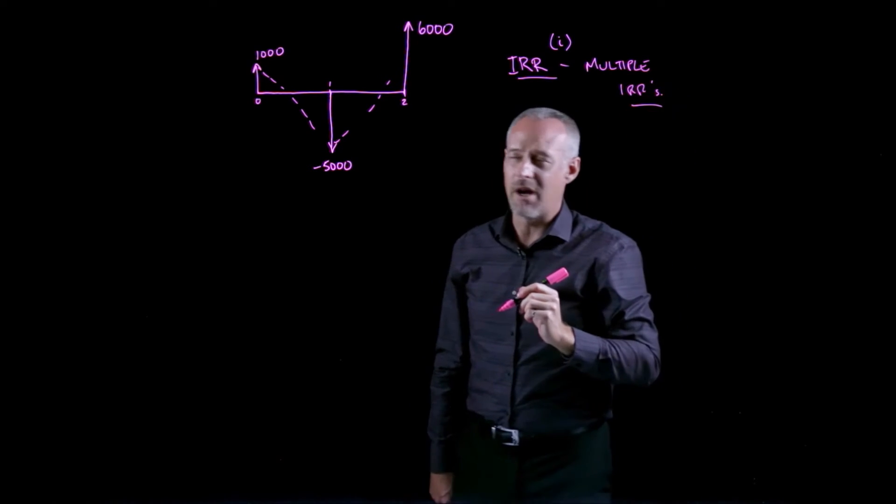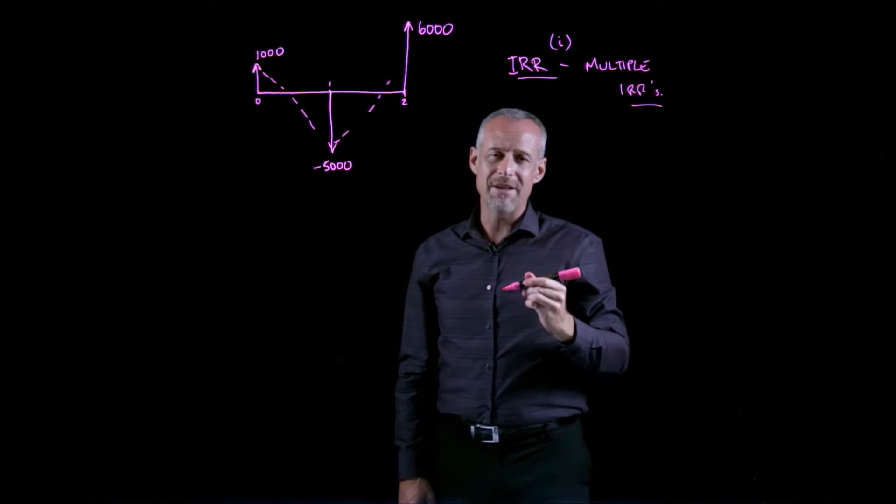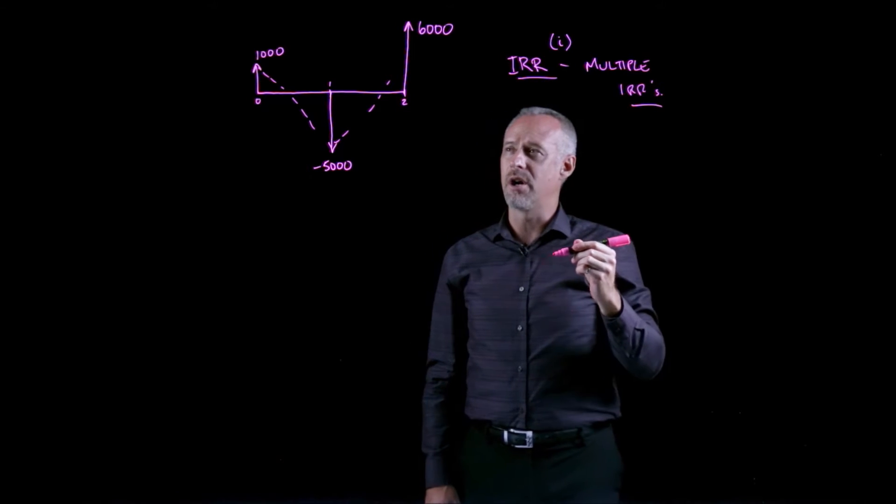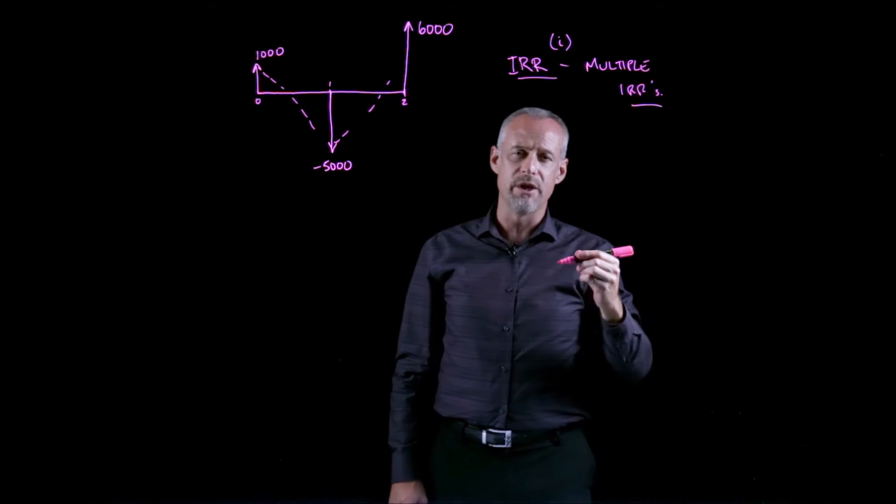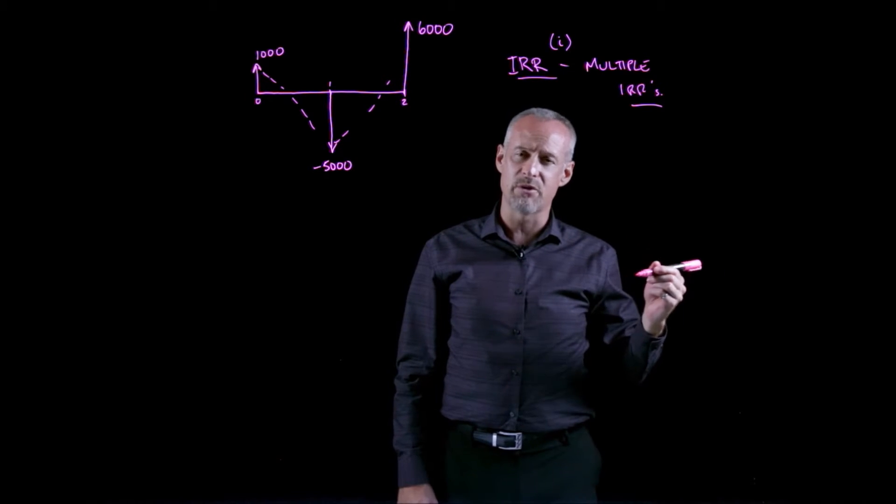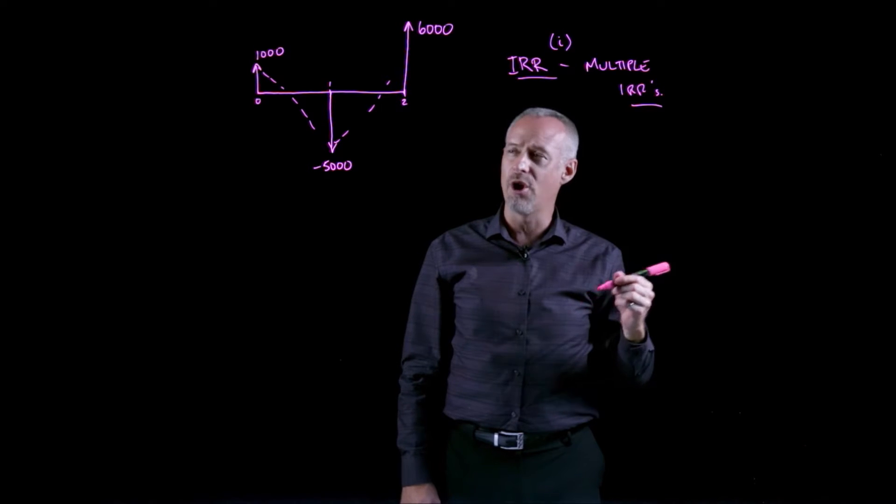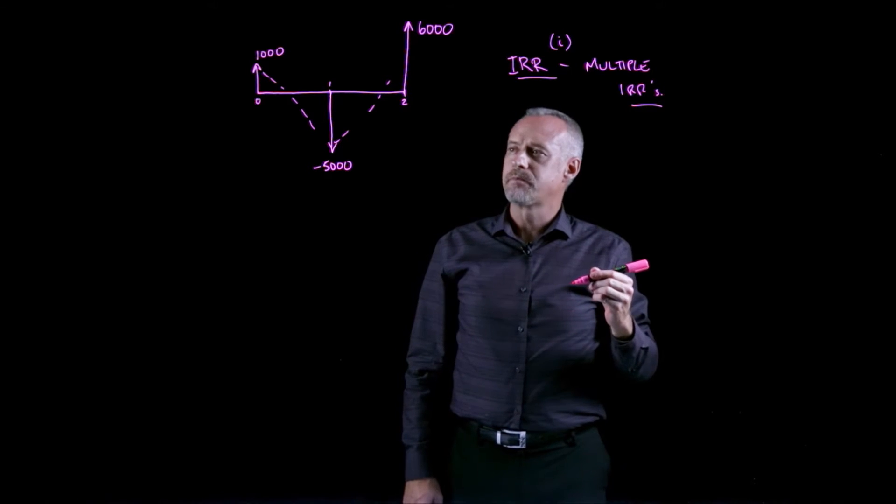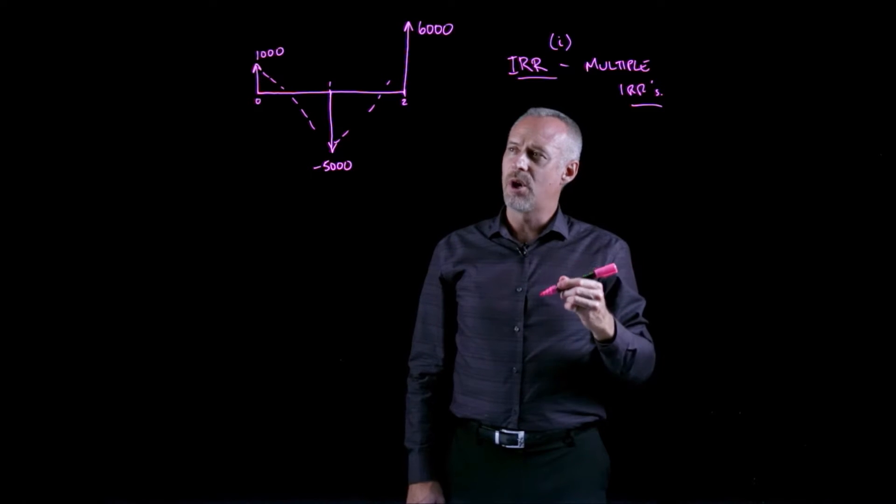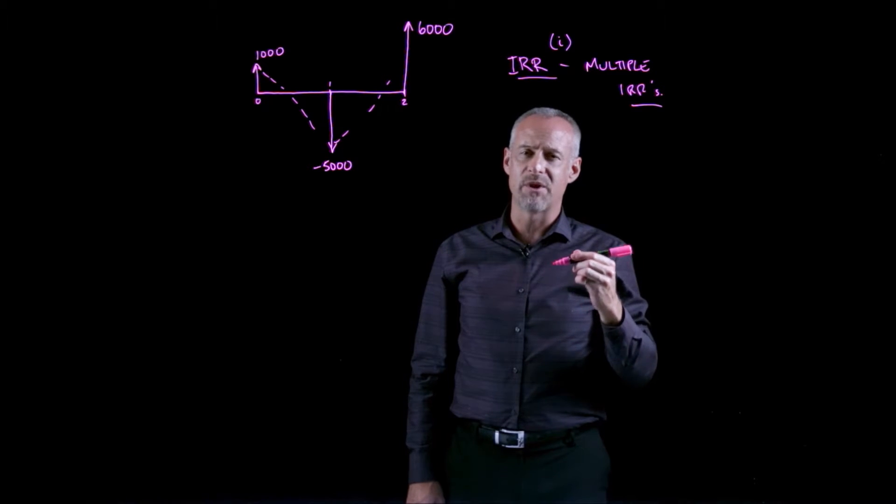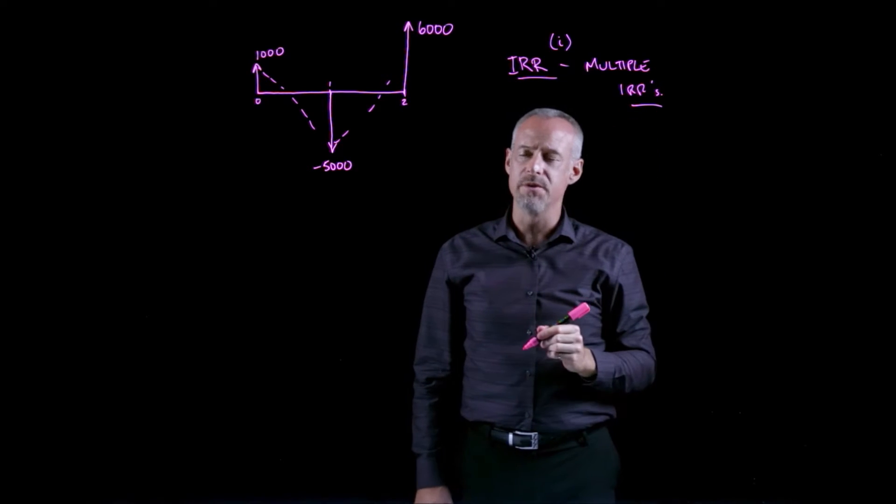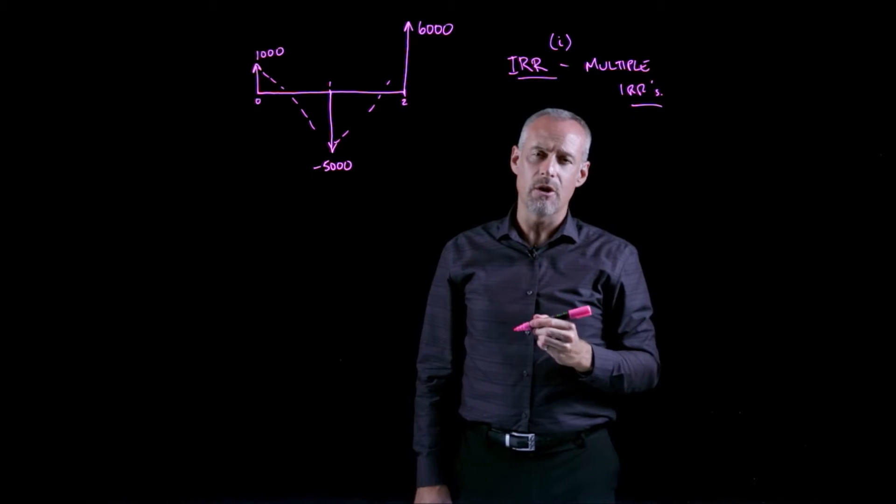Multiple IRRs prevent us from making a conclusion about whether or not the rate of return on a project is truly greater than the MAR, the minimum acceptable or minimum attractive rate of return for the company. So we need to think of an approach for solving problems that have potentially multiple IRRs, and one of those approaches we call the ERR.